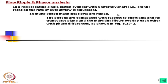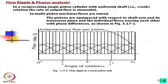The pistons are equispaced with respect to the shaft axis and its transverse plane, and individual flows overlap each other with phase differences as shown in figure 5.72. Each piston's flow curve is derived by dividing 2π by the number of pistons as the phase offset angle. Ideally the curve is sinusoidal, but depending on kinematics, higher harmonics may be present.